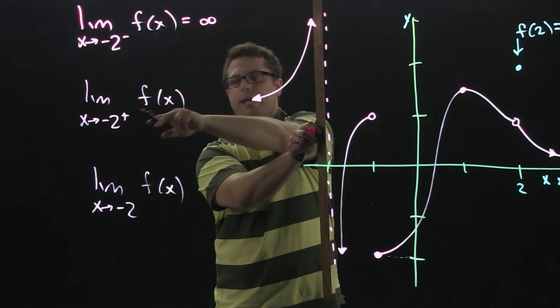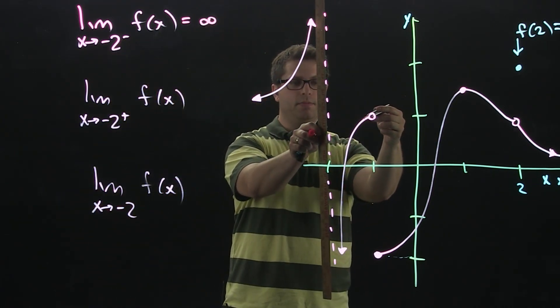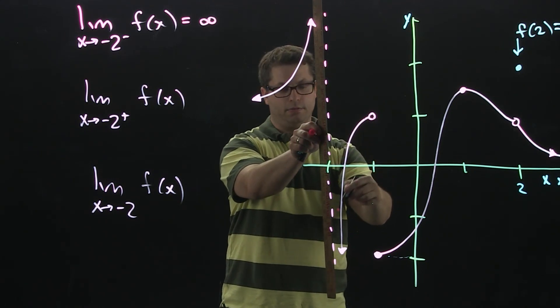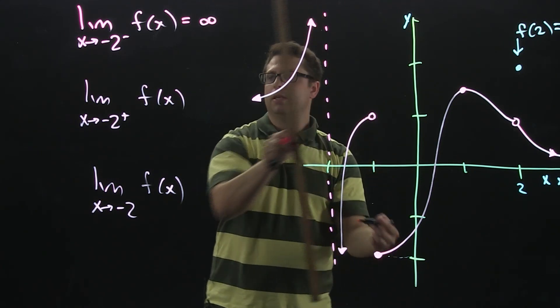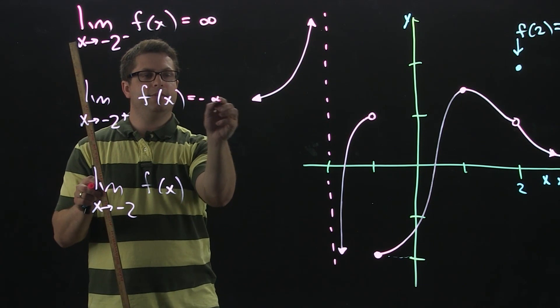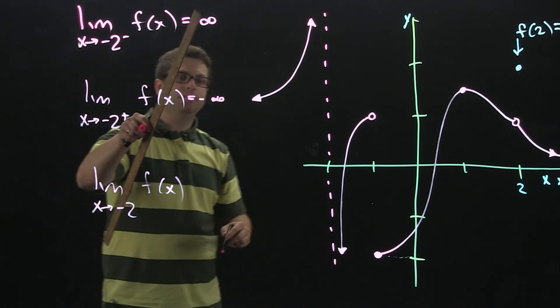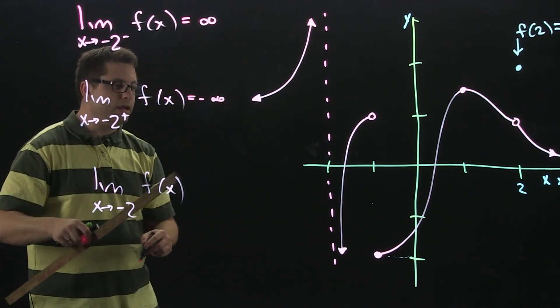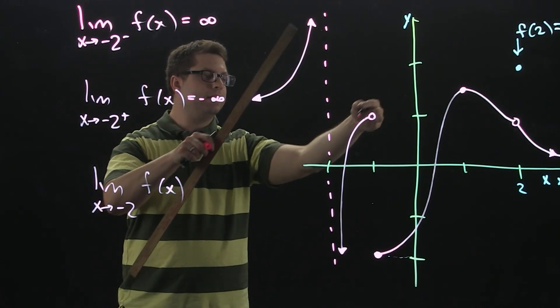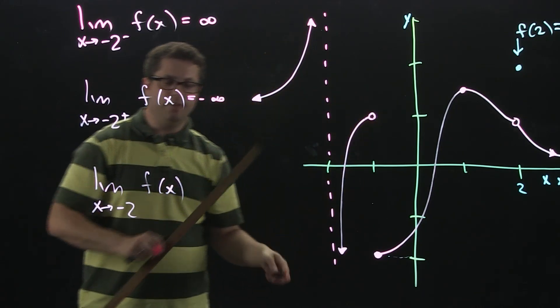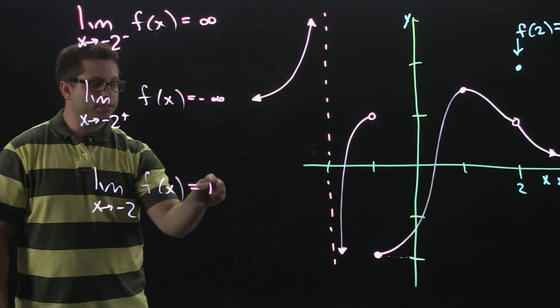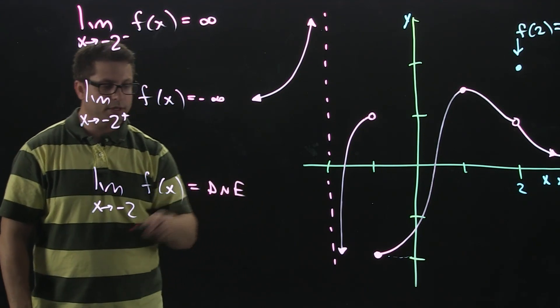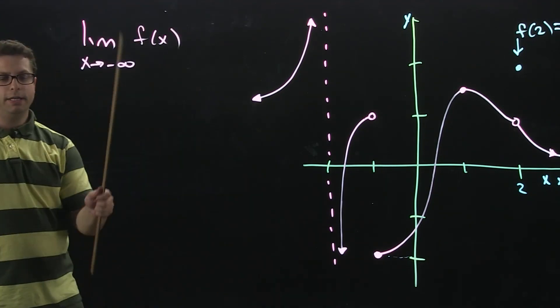Now, doing the right-hand limit, as we approach from the right, the graph is going down forever, and so that will be negative infinity. Now, since this is positive and this is negative, they're not going to meet, and clearly you can see that these aren't going to meet at the same value. So, this is going to be DNE for does not exist.